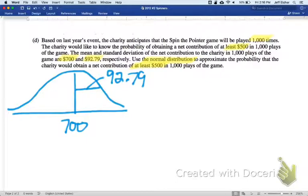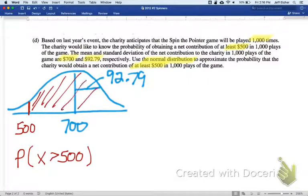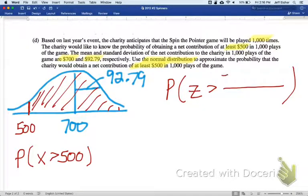So we have 1,000 times at least $500. The mean is 700 and the standard deviation is 92.79. Use a normal distribution to approximate the probability that we get at least $500 in a thousand plays. So you're told that we can use a normal distribution and you're told the mean is 700 and you're told that the standard deviation is 92.79. And you'd like to know the probability that we get at least 500. 500 looks like it's going to be about two standard deviations away. And you want at least 500, probability that the X, the net contribution, is greater than 500. That's greater, so at least would be shaded on this side. So we're going to get a very large chance.